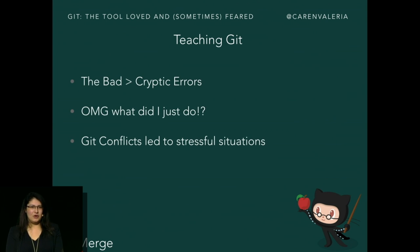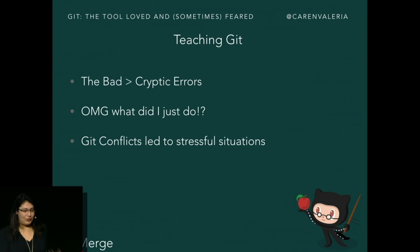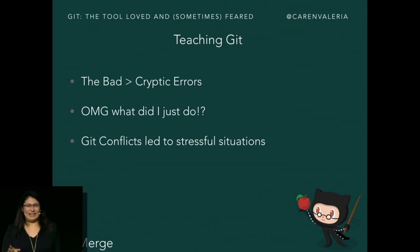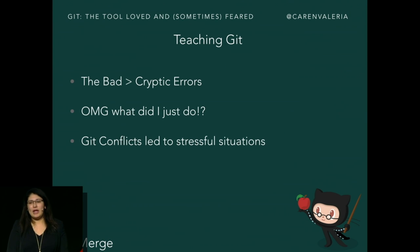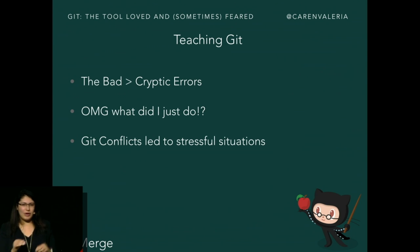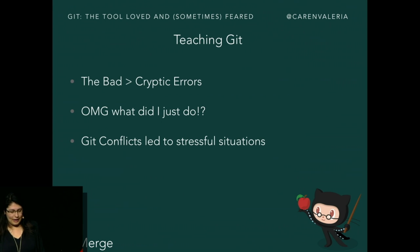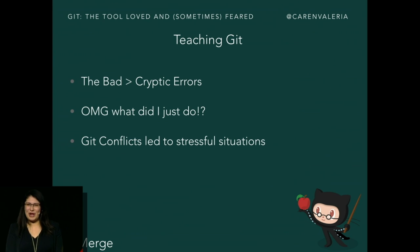The bad: cryptic errors. A lot of my students went into full-on panic mode whenever they got Git conflicts. It led to a lot of stressful situations, a lot of tears. As experienced developers, you've seen these errors before. It's definitely important to make sure that they stay calm and go through the error together, see what it is, Google it, and you'll eventually find the answer you're looking for.